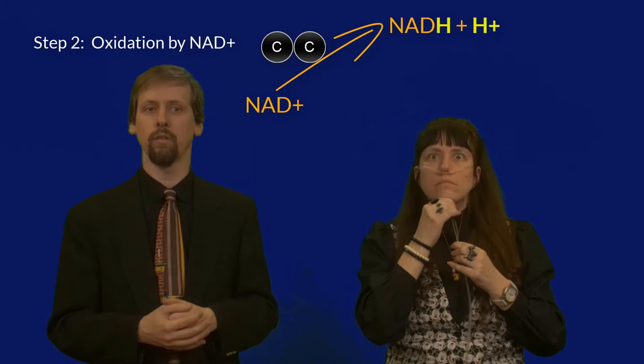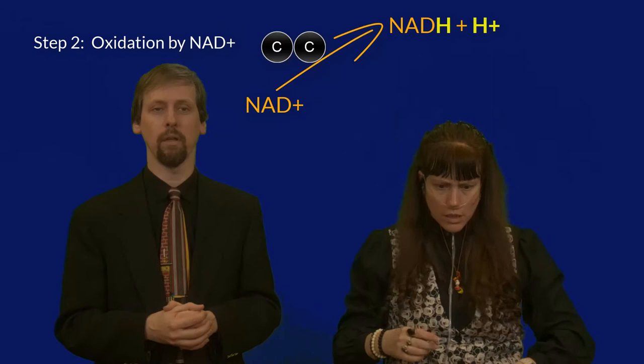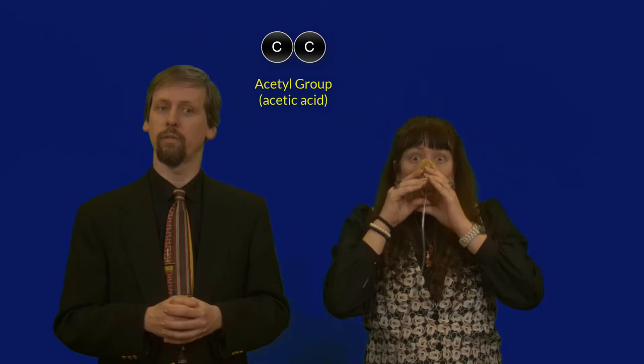The second step is another oxidation by NAD+, like the ones we saw in glycolysis. You'll want to remember this because it will figure into our final tally of ATPs gained from the complete catabolism of a glucose molecule. The oxidized two-carbon fragment is now called an acetyl group or acetic acid. The third and final preparatory step is to add coenzyme A to that acetyl group — and now we call that acetyl-CoA.